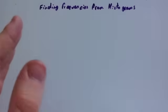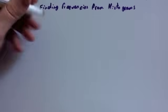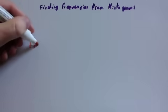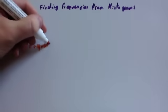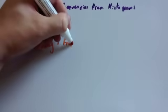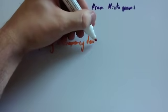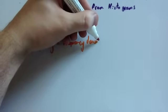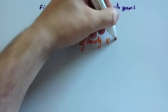Okay, in this video we're going to look at finding frequencies from histograms. So, to find the frequency from a histogram, frequency equals frequency density times class width.